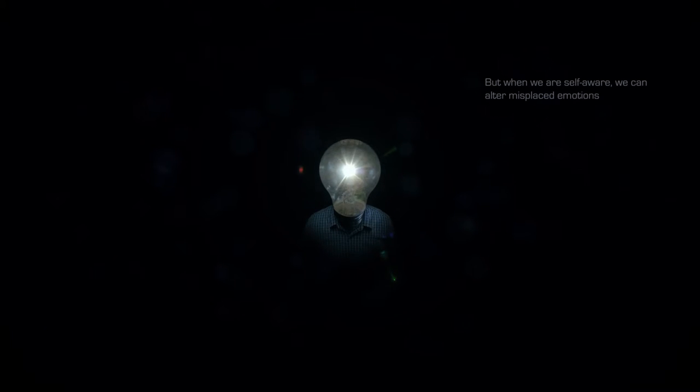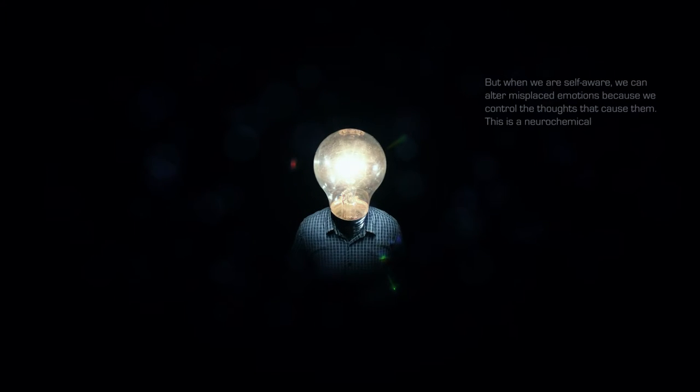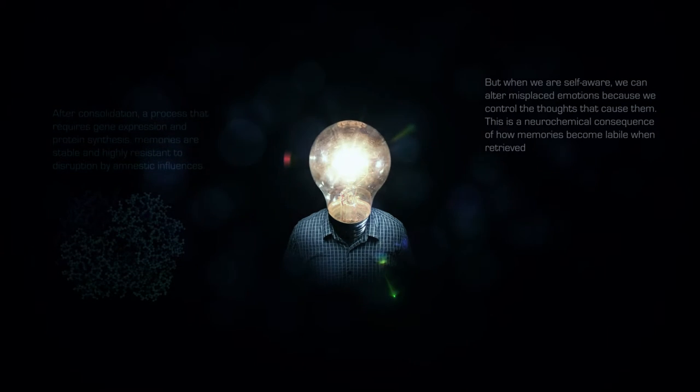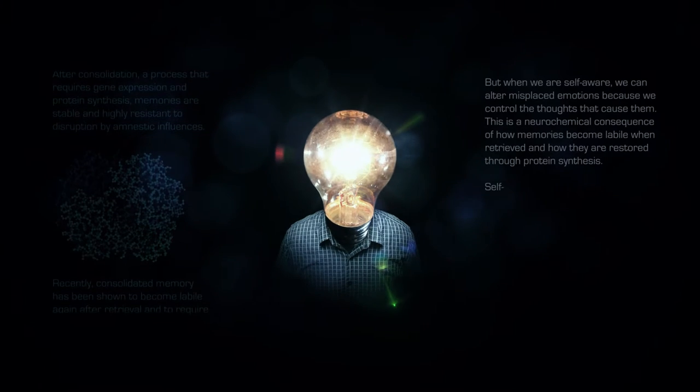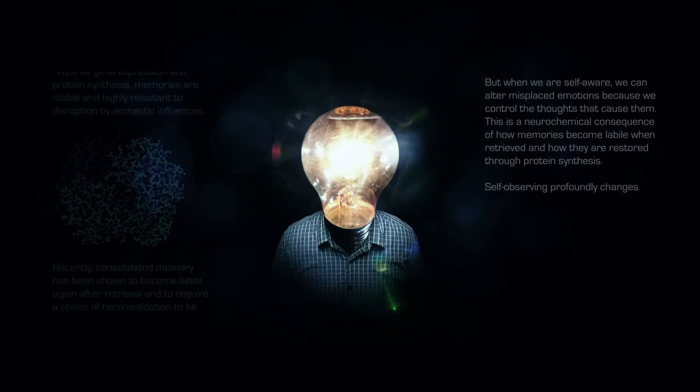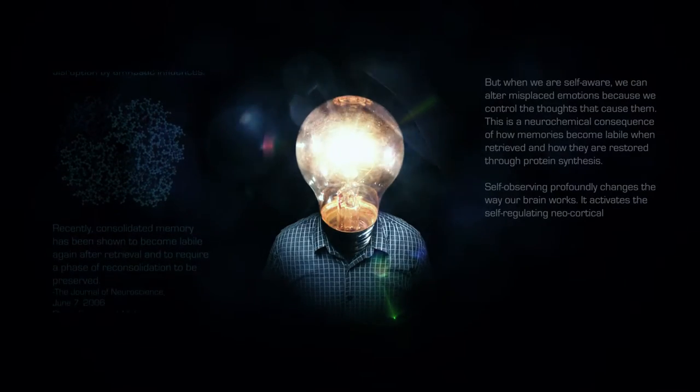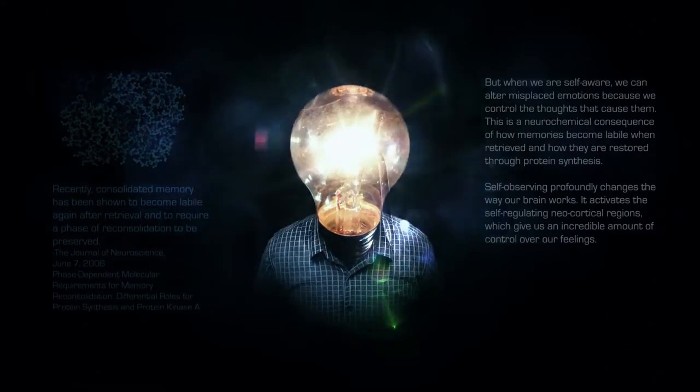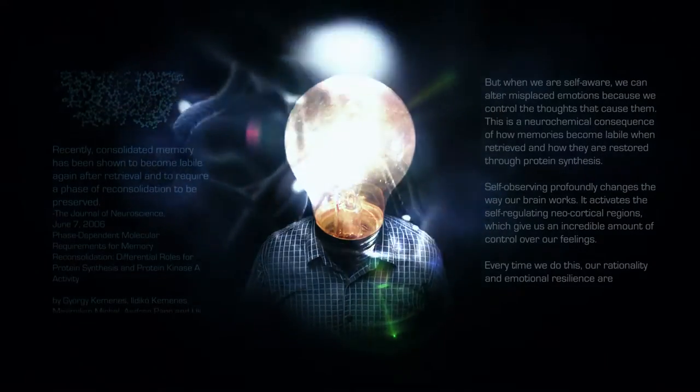But when we are self-aware, we can alter misplaced emotions because we control the thoughts that cause them. This is a neurochemical consequence of how memories become labeled when retrieved and how they are restored through protein synthesis. Self-observing profoundly changes the way our brain works. It activates the self-regulating neocortical regions which give us an incredible amount of control over our feelings. Every time we do this, our rationality and emotional resilience are strengthened.